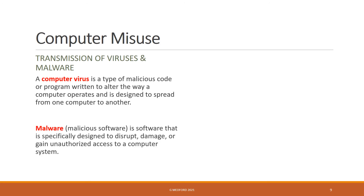Transmission of viruses and malware: a computer virus is a type of malicious code or program which is written to alter the way a computer operates, and it is designed to spread from one computer to another. Malware, which is an abbreviation for malicious software, is software that is specifically designed to disrupt, damage or gain unauthorized access to a computer system.